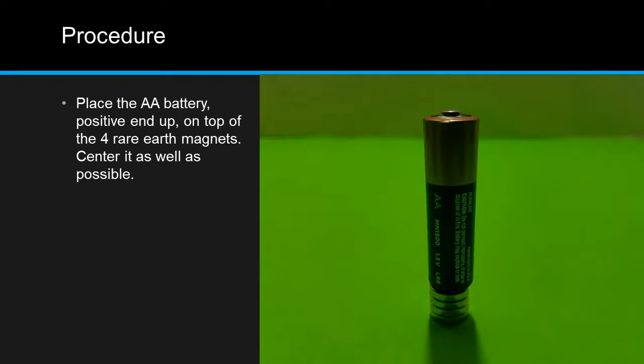Place the AA battery positive end up on top of the four rare earth magnets. Center it as well as possible. Believe it or not, you're just about done.